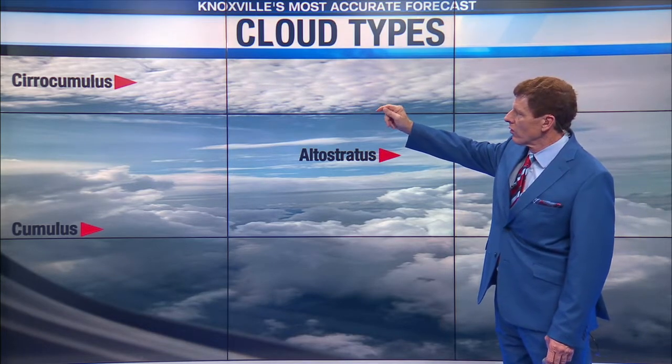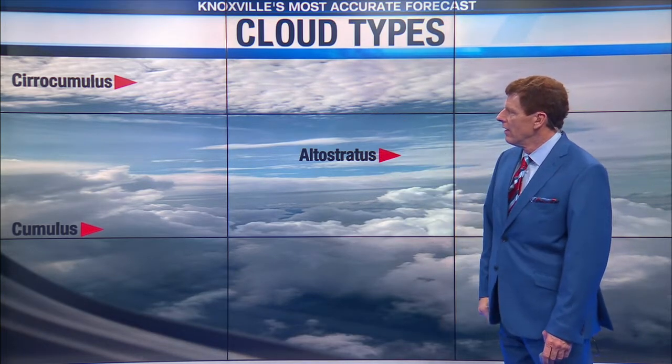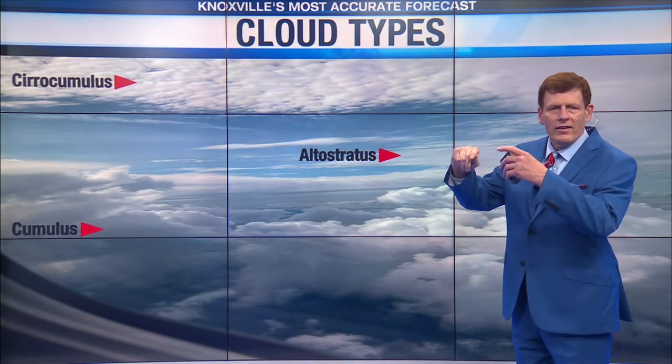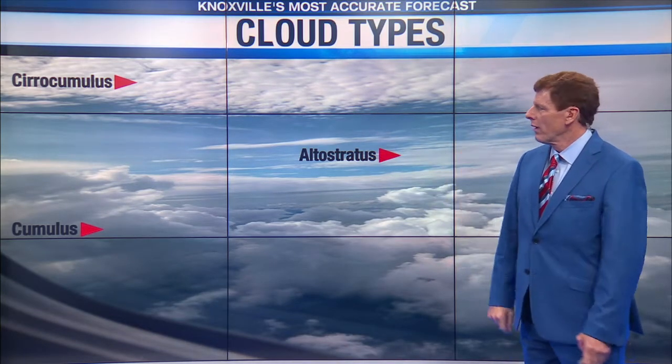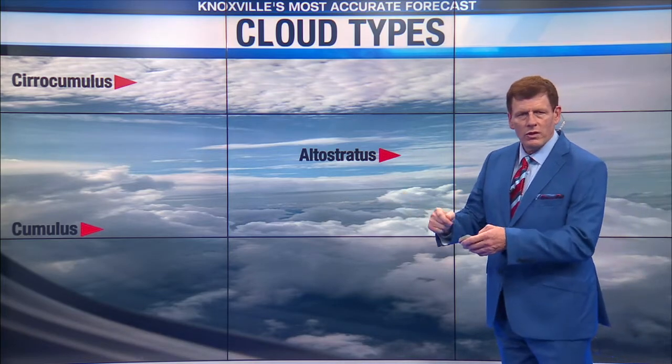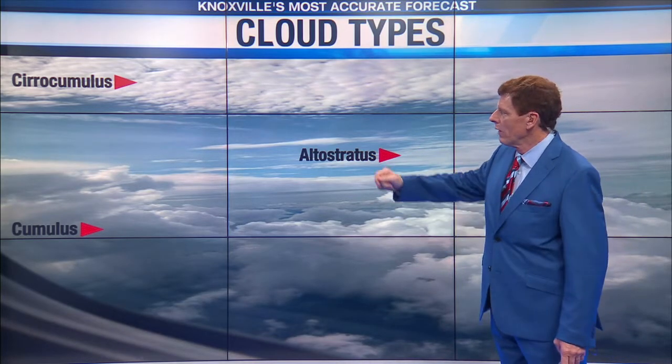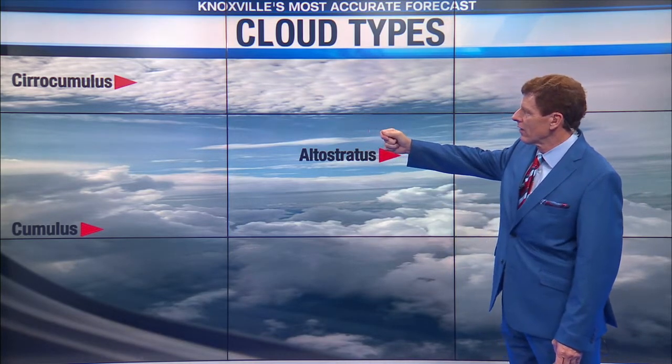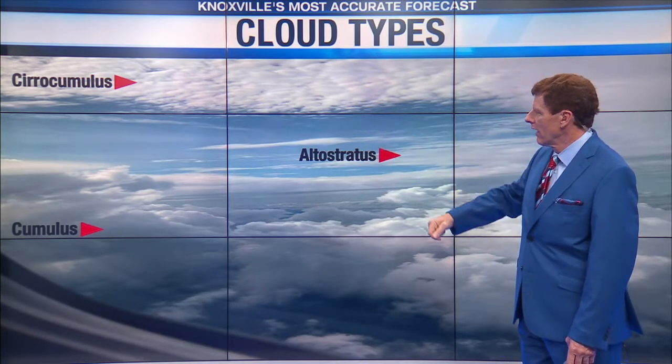How about a cirrocumulus cloud? Look at that way top left corner of your screen there — that's way up high. 'Cirrus' means you're way up high, and 'cumulus' means puffy clouds. So that's the cirrocumulus cloud, way up high in the sky.